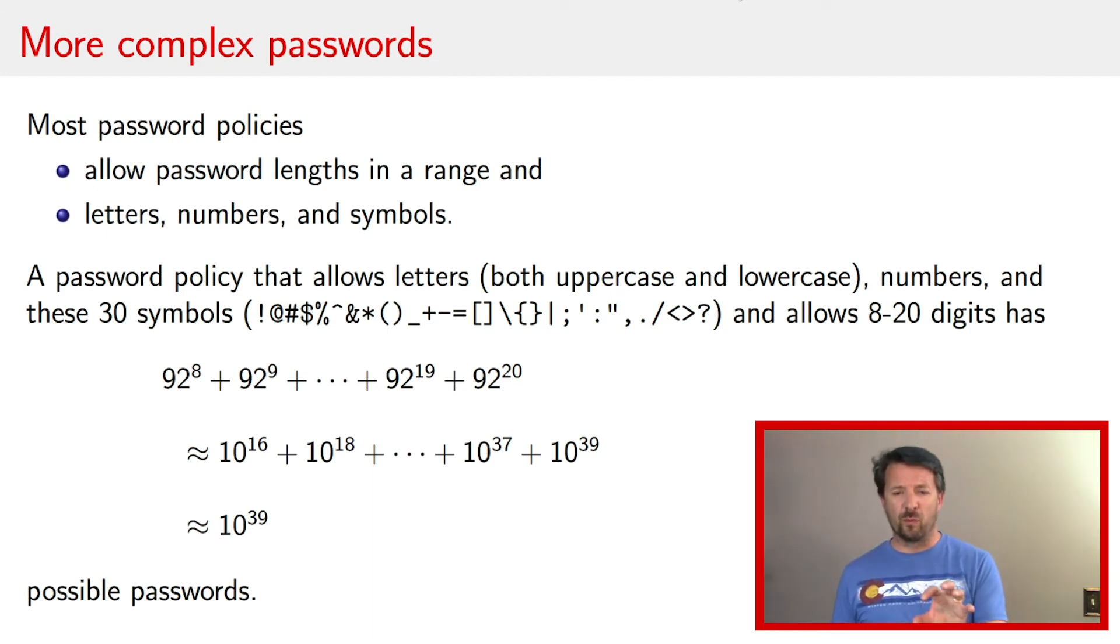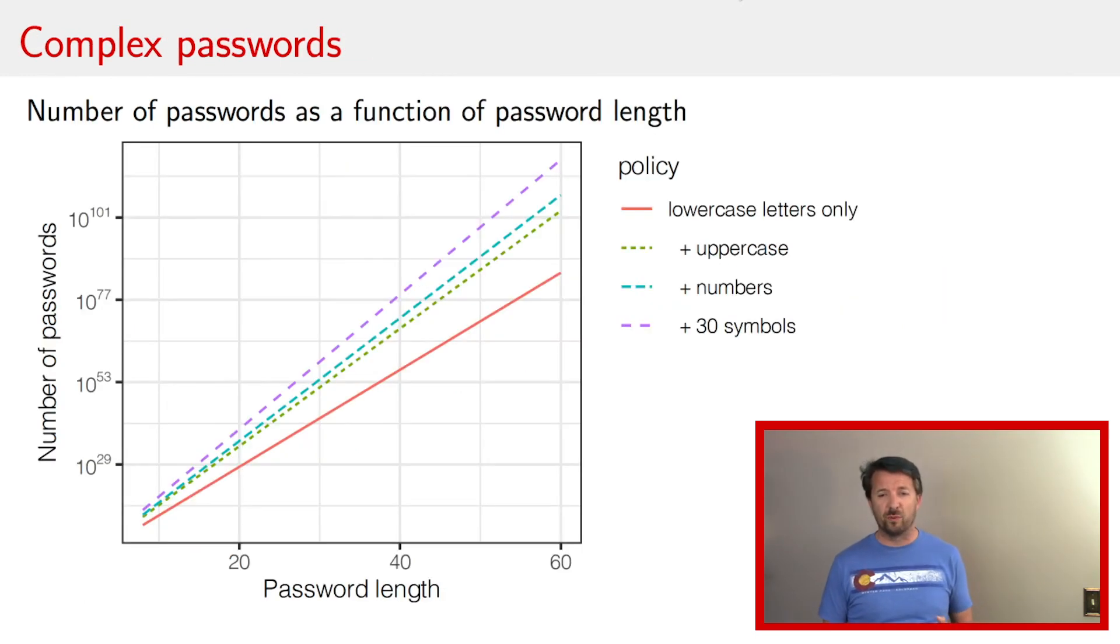Now, it's a little bit hard to understand when we're looking at these numbers, how many passwords there are, so it might be helpful to visualize what's going on. So here's a graphical depiction of the number of allowed passwords under a number of different password policies. Here we have the password length on the x-axis, we have the number of passwords on the y-axis, and we have sets of different allowable digits as the four different lines. The solid line is lowercase only, the next line up includes uppercase letters, the next line up from that includes the uppercase letters and numbers, and the final line allows you both uppercase and lowercase letters, numbers, and 30 different symbols.